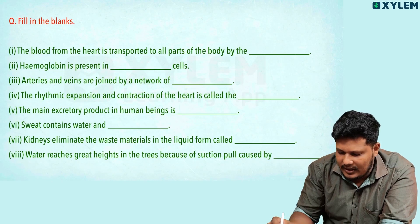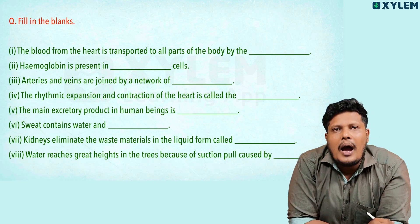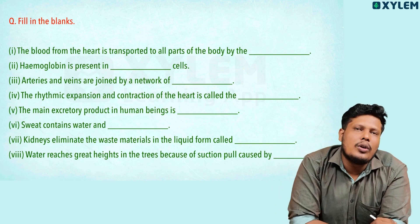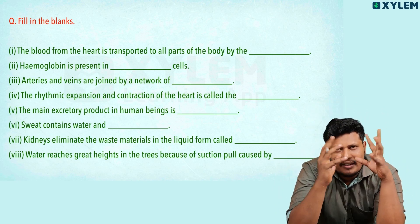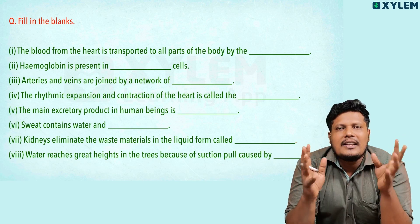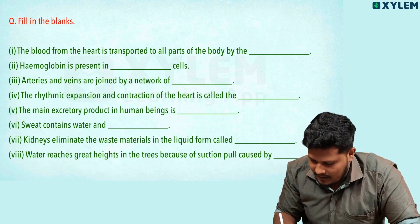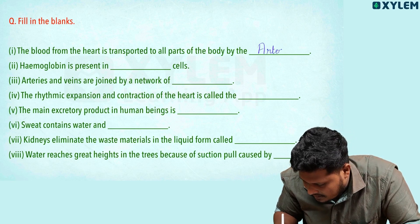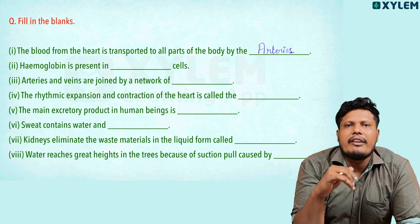Fill in the blanks. The blood from the heart is transported to all parts of the body. That blood vessel is an artery. So the answer will be arteries — blood vessels which carry blood away from the heart.